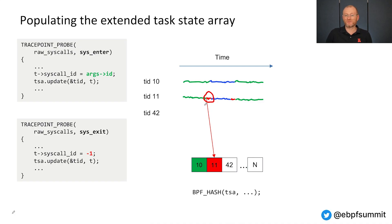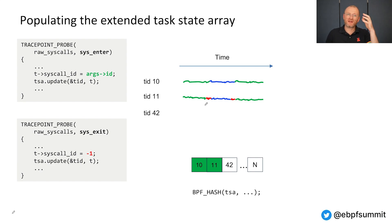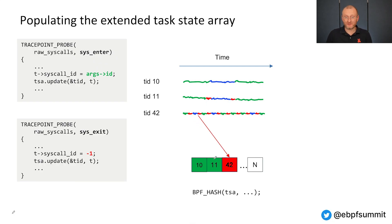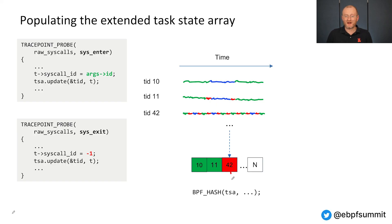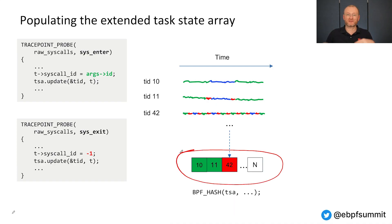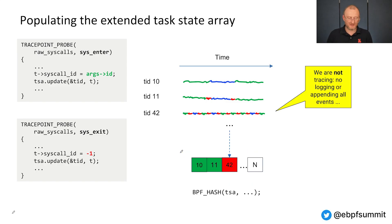Perhaps the thread is still on CPU but in kernel mode rather than user mode — every time the thread state changes we update the extended task state array with the latest state only. We are overriding the state. If somebody runs many system calls per second, we are not logging every system call into a trace, but just keeping the latest current state in this array.